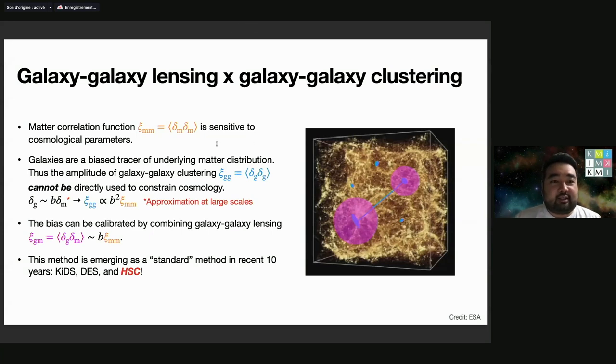Why lensing and clustering? The matter correlation function is sensitive to cosmological parameters, but it's very difficult to measure because most of the matter in the universe is dark matter. On the other hand, galaxies are easier to observe, and we can compute the galaxy-galaxy clustering.